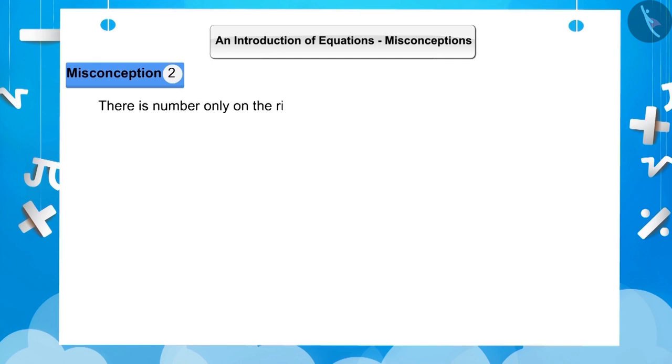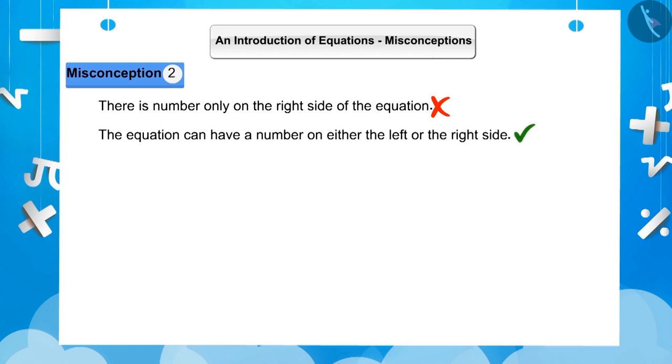Misconception 2. Let us now understand another misconception. Children often assume that an equation has a number only on the right-hand side, but it is not necessary, for an equation can have a number on either the left or right sides.